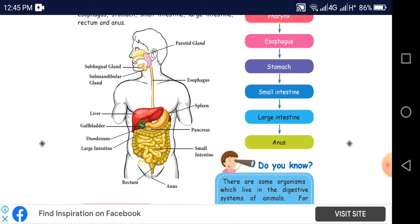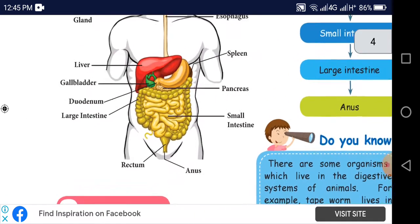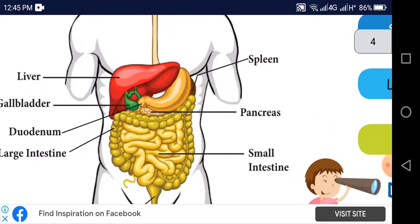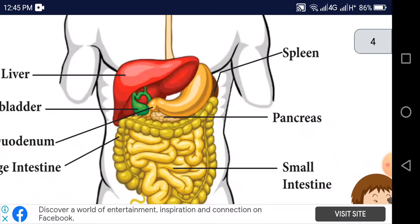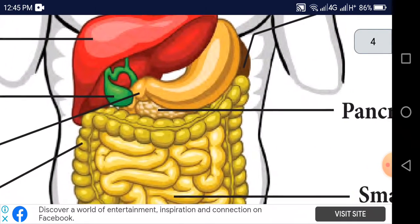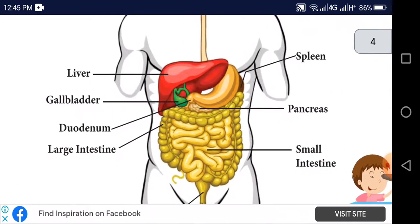Anus is used for excretion. It is used as a waste product. Small intestine, large intestine, pancreas. What is the stomach? The stomach. There is a layer. The pancreas.